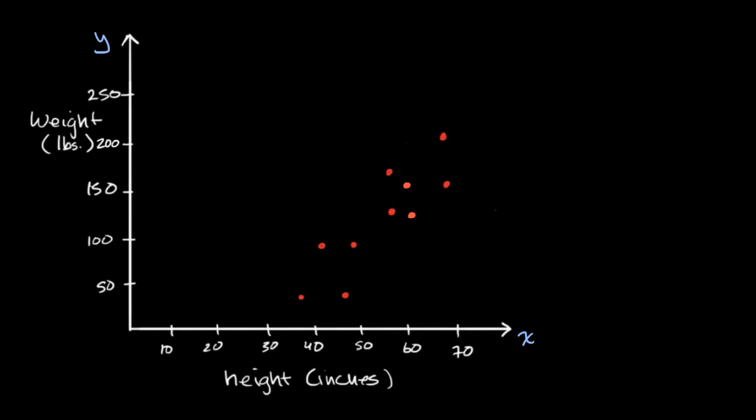Let's say we're trying to understand the relationship between people's height and their weight. So what we do is we go to 10 different people and we measure each of their heights and each of their weights.